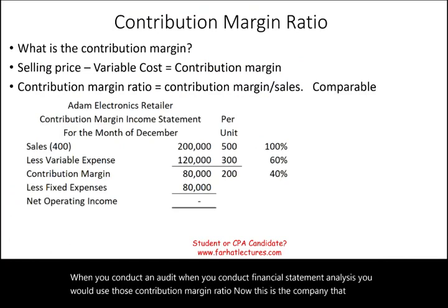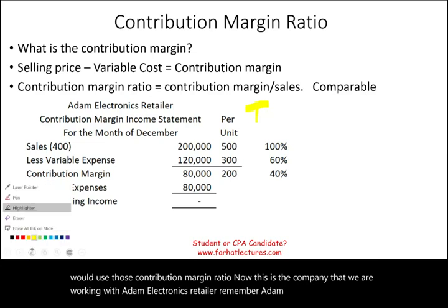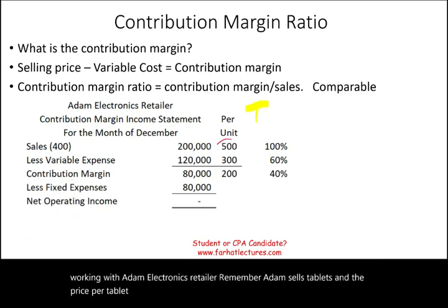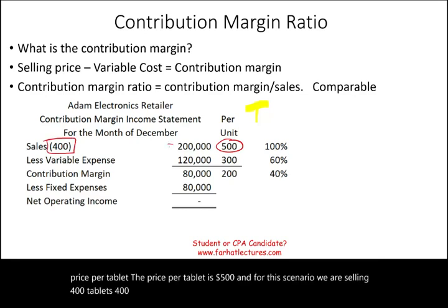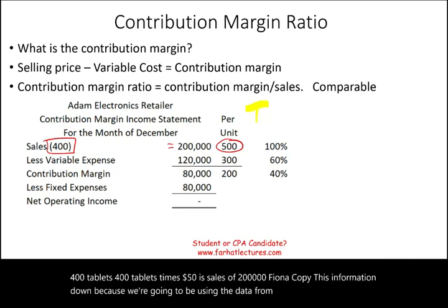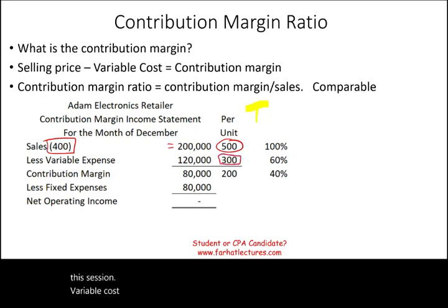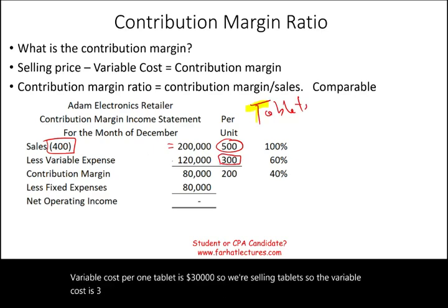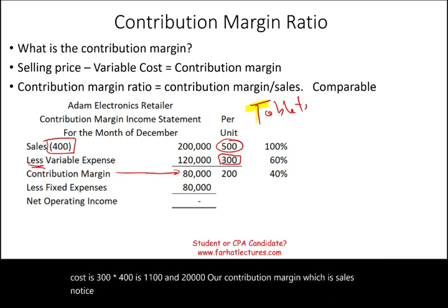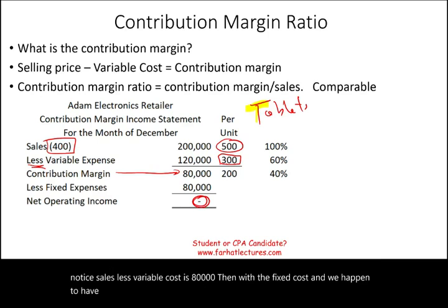Now, this is the company that we are working with: Adam Electronics retailer. Adam sells tablets and the price per tablet is $500. For this scenario, we are selling 400 tablets — 400 times $500 gives us sales of $200,000. The variable cost per one tablet is $300, so variable cost is $300 times 400 equals $120,000. Our contribution margin — sales less variable cost — is $80,000. Then we deduct the fixed cost, and we happen to have a net operating profit of zero.